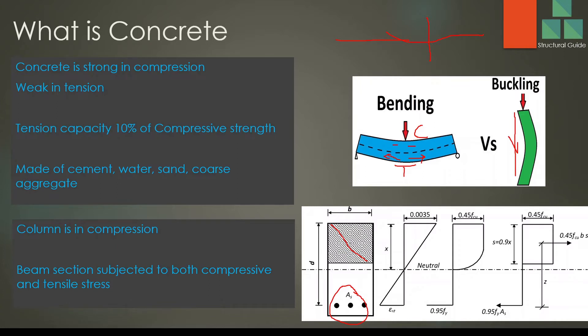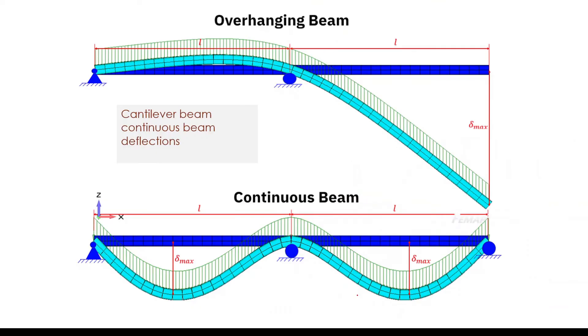In summary, when compressive stress needs to be enhanced, we provide reinforcement. In addition, when there are tensile stresses in the section, we have to provide reinforcement. These are the areas where we need reinforcement in a structural section.